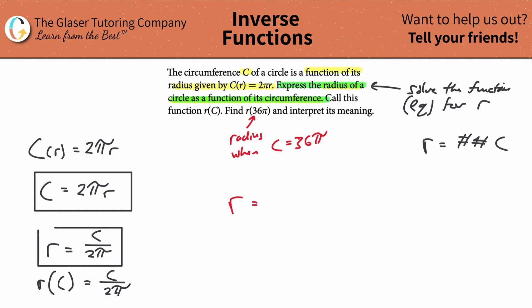So r equals C over 2π. If I plug in the circumference value of 36π and divide that by 2π, notice what happens. Pies go bye-bye. And this can reduce down to 18.